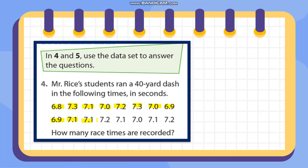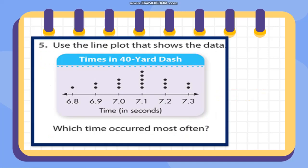The times are: 6.8, 7.3, 7.1, 7.0, 7.2, 7.3, 7.0, 6.9, 6.9, 7.1, 7.1, 7.1, 7.1, 7.2. How many race times are recorded? Counting: 1, 2, 3, 4, 5, 6, 7, 8, 9, 10, 11, 12, 13, 14, 15, 16 — there are 16 race times. The line plot shows: 6.8 has one, 6.9 has two, 7.0 has three, 7.1 has five, 7.2 has three, and 7.3 has two.